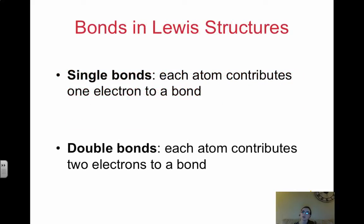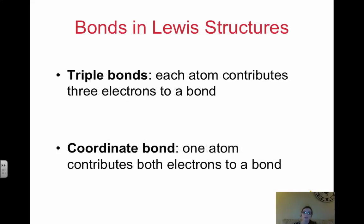When we look at Lewis structures, we're going to focus on single bonds, double bonds, and triple bonds. Single bonds, each atom contributes one electron to the bond. So a single bond contains two electrons. Each atom shares one to the bond. Double bonds have four electrons, so each atom contributes two.